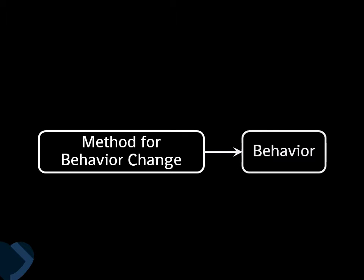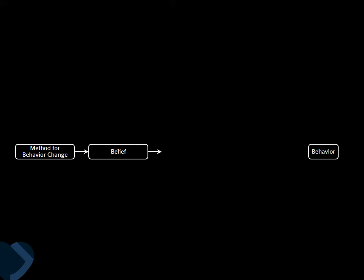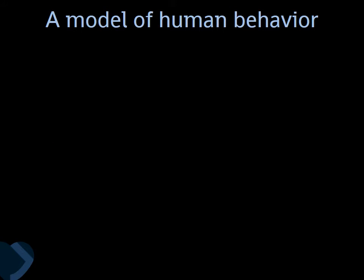This is the model of behavior change that most laypeople have in their heads: if you want to change behavior, you find a method, apply it, and then behavior changes. Of course, you know better. You can never directly change behavior — you change what people think, you change their beliefs. These beliefs together form psychological variables we call determinants, and those determinants in turn influence sub-behaviors called performance objectives, and then eventually we change behavior.